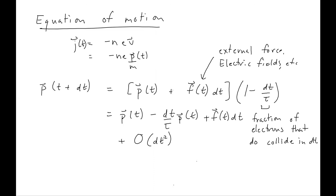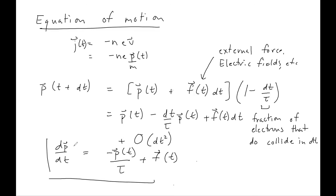Expanding out the terms and neglecting terms of order dt² or higher (including contributions from electrons that did collide), we bring the p(t) and p(t+dt) terms to the same side and divide through by dt. This gives dp/dt equals minus p(t)/tau plus f(t). This is the equation of motion for electrons in the Drude model, and this is what we will use to compute the behavior of electrons in the presence of magnetic fields — the subject of our next mini lecture on the Hall effect.